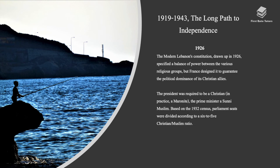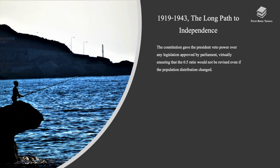Modern Lebanon's constitution, drawn up in 1926, specified a balance of power between the various religious groups, but France designed it to guarantee the political dominance of its Christian allies. The president was required to be Christian and the prime minister a Sunni Muslim. Based on the 1932 census, parliament seats were divided according to a 6 to 5 Christian-to-Muslim ratio. The constitution gave the president veto power over any legislation approved by parliament, virtually ensuring that the 6-to-5 ratio would not be revised even if the population distribution changed.